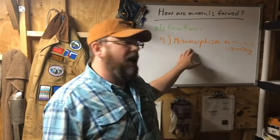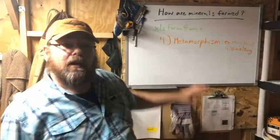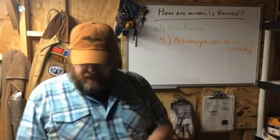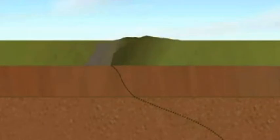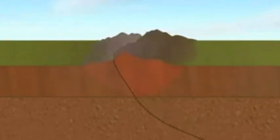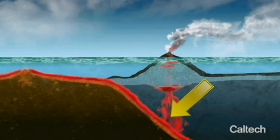Number four is metamorphism from existing solids — rocks or minerals — mostly without actual melting taking place. This can include mineraloids as well. If melting occurs, then you no longer have metamorphism; you have molten material, which kicks you back to number one. So the rocks don't melt. When two tectonic plates collide, they can form mountains — we call that an orogenic event or orogeny — and that creates a lot of heat and pressure, which can alter the chemistry of rocks without melting them.